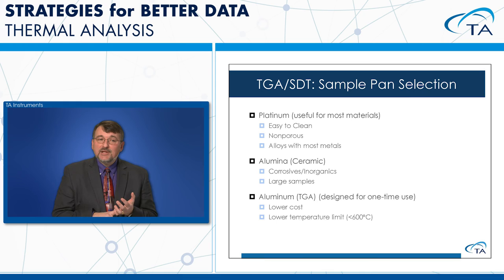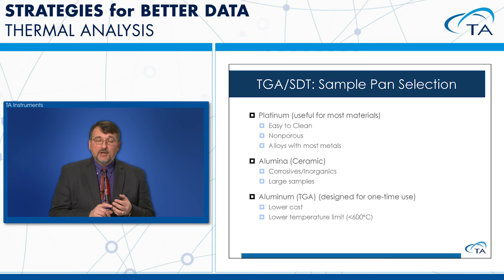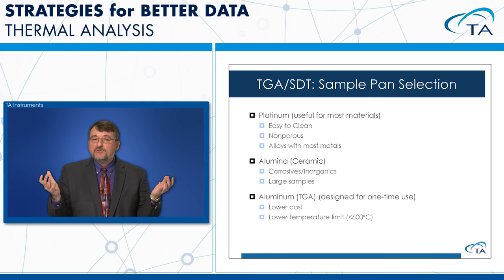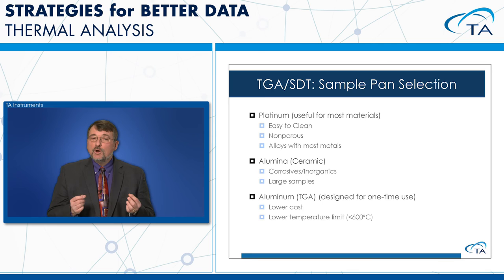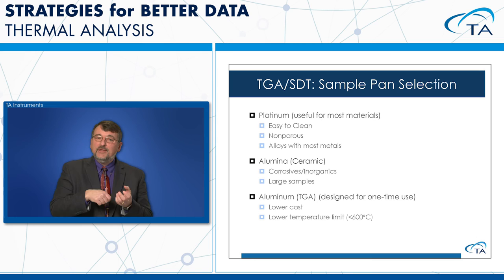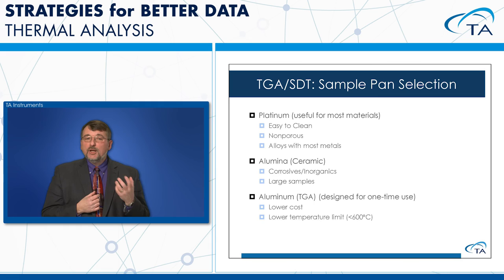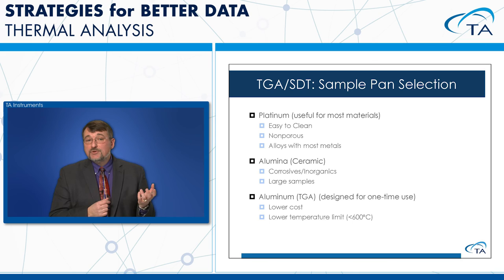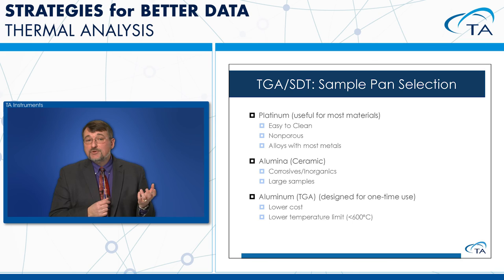Pan material matters: platinum pans are easy to clean by burning off the sample and are non-porous, but can alloy with most metals. Alumina or ceramic pans are good for corrosive and inorganic samples and larger samples, though slightly harder to clean due to porosity. Aluminum pans are essentially single-use — you can clean them in solvent, but heating to burn off the sample melts the aluminum.